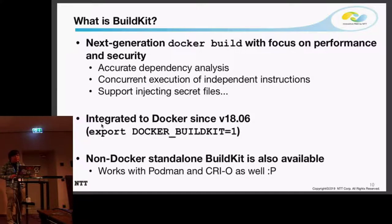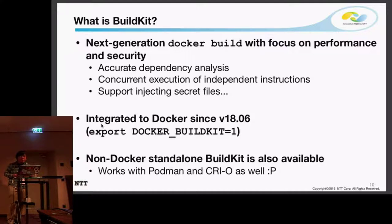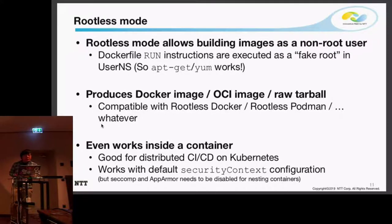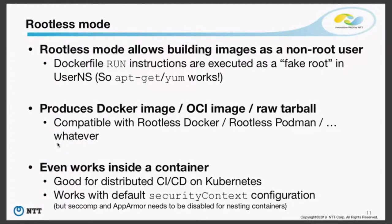BuildKit has been integrated into Docker since version 18.06, and you can enable BuildKit by setting the environment variable called DOCKER_BUILDKIT. You don't necessarily need to use Docker for BuildKit — there's a standalone version that should work with Podman and cloud as well, and with any container runtime such as Singularity or ClearCloud or whatever. BuildKit doesn't need root privileges, so we can use user namespaces for executing Dockerfile RUN instructions. Inside a user namespace, you can gain fake root privileges, so you can execute apt-get, yum, or any package manager that typically needs root, without real root.